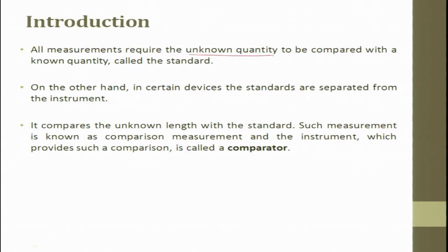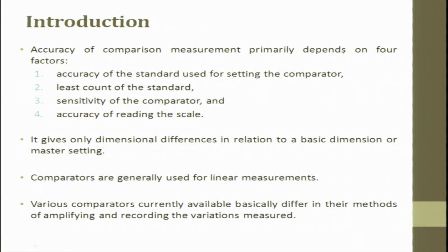All measurements require an unknown quantity to be compared with the known quantity called the standard. In certain devices, the standards are separated from the instrument. It compares the unknown length with the standard — such measurement is known as comparison measurement, and the instrument used to provide that comparison is called a comparator. The accuracy of a comparison measurement primarily depends on four factors. First, it depends on the accuracy of the standard used for setting the comparator.